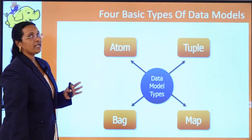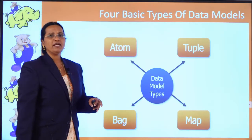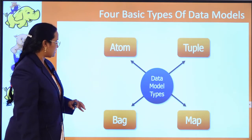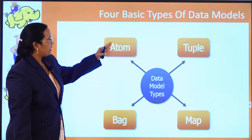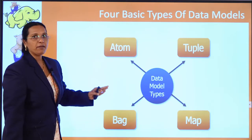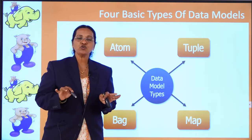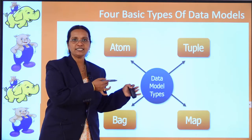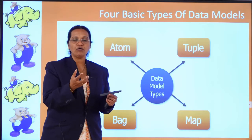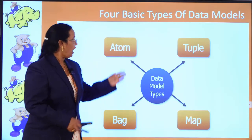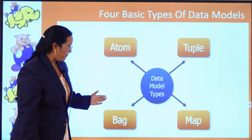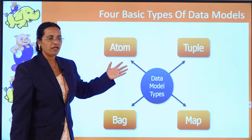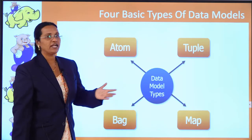Now let us look at PIG data models. Generally in PIG there are four data models: atom, tuple, bag, and map. The entire data story of PIG lies in these four models — all the data you have will be in the form of an atom, tuple, bag, or map.